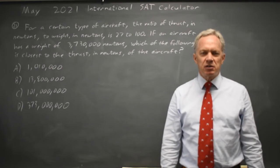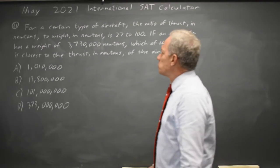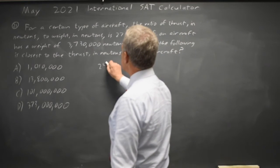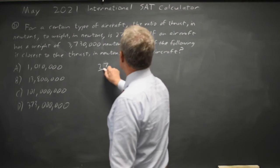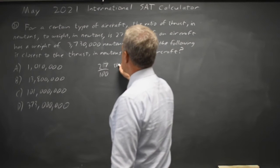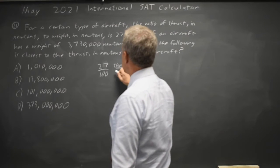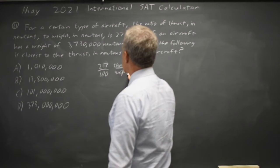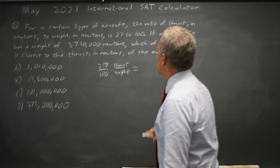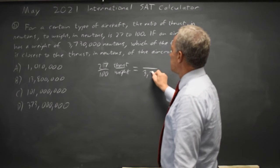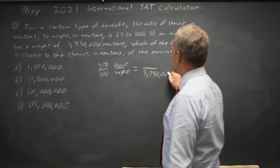The College Board is asking a question on ratios. We're told that the thrust to weight ratio is 27 to 100, and we're told that the weight is 3,730,000.